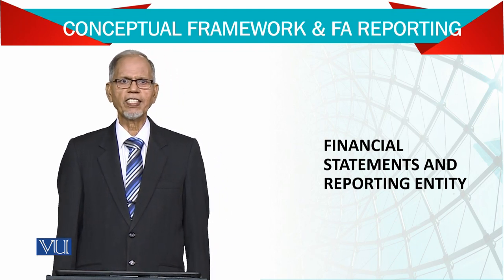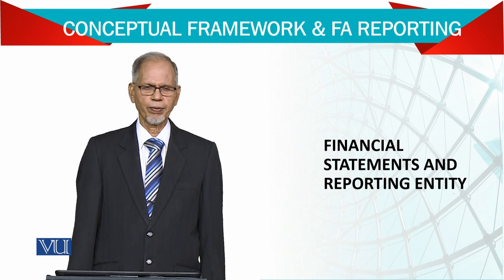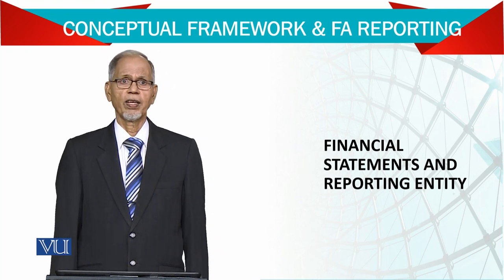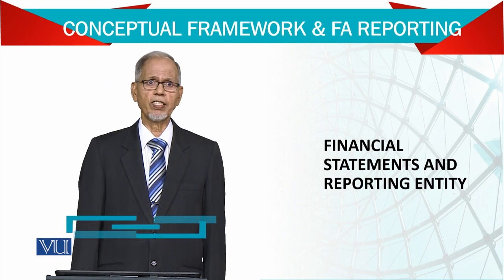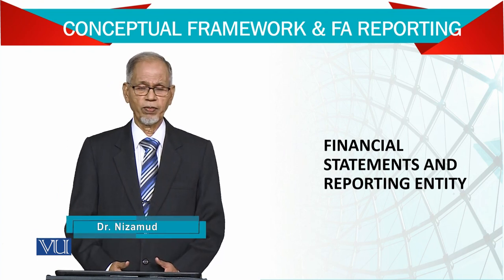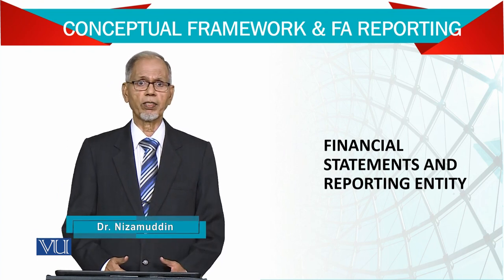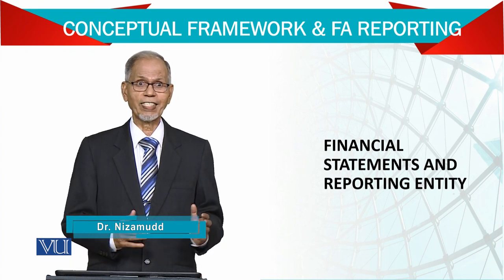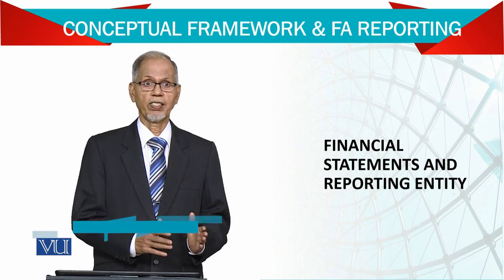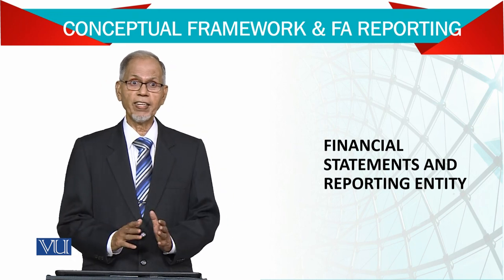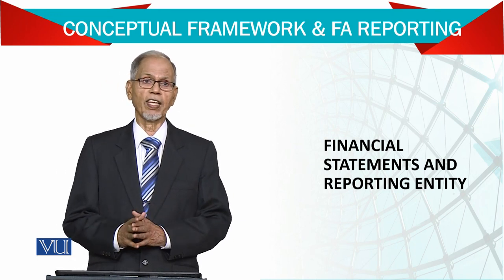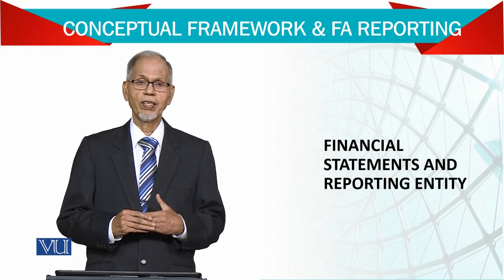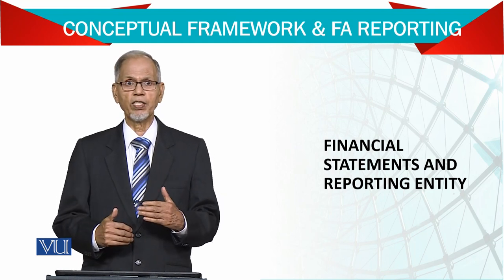A reporting entity can be a single company or it can be a group of companies. The difference is a single company is producing the accounts of its own, but when we are talking about a group of companies, it means we are preparing one single statement for two or three companies together, depending on whether those companies are related or not. For example, a parent company, a subsidiary company.